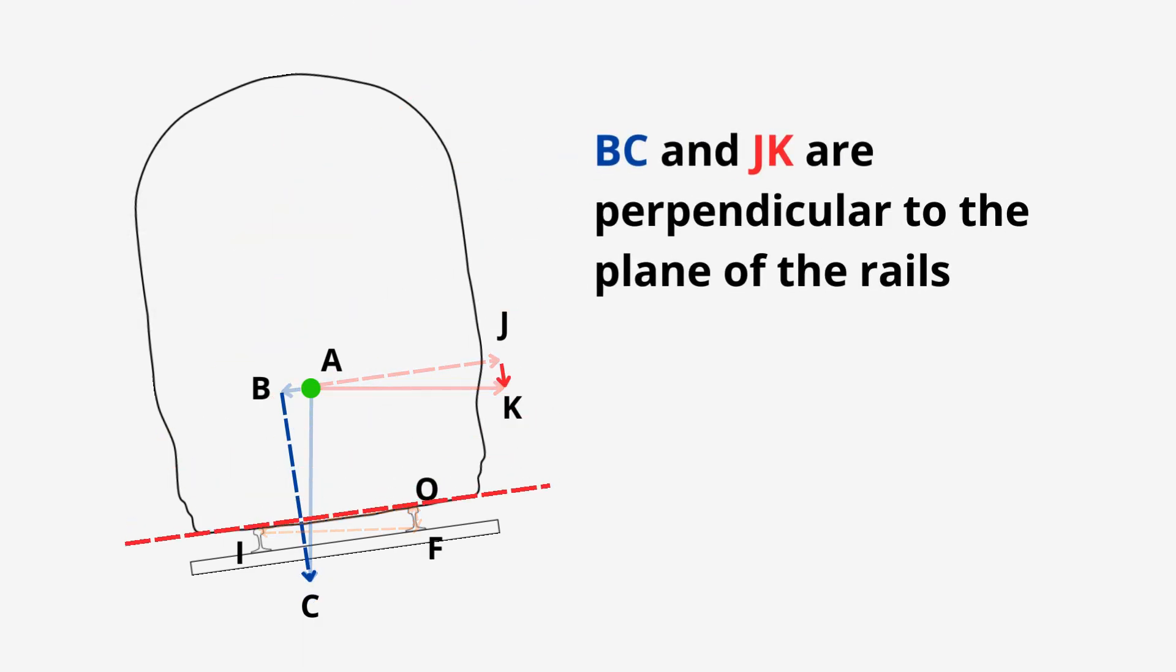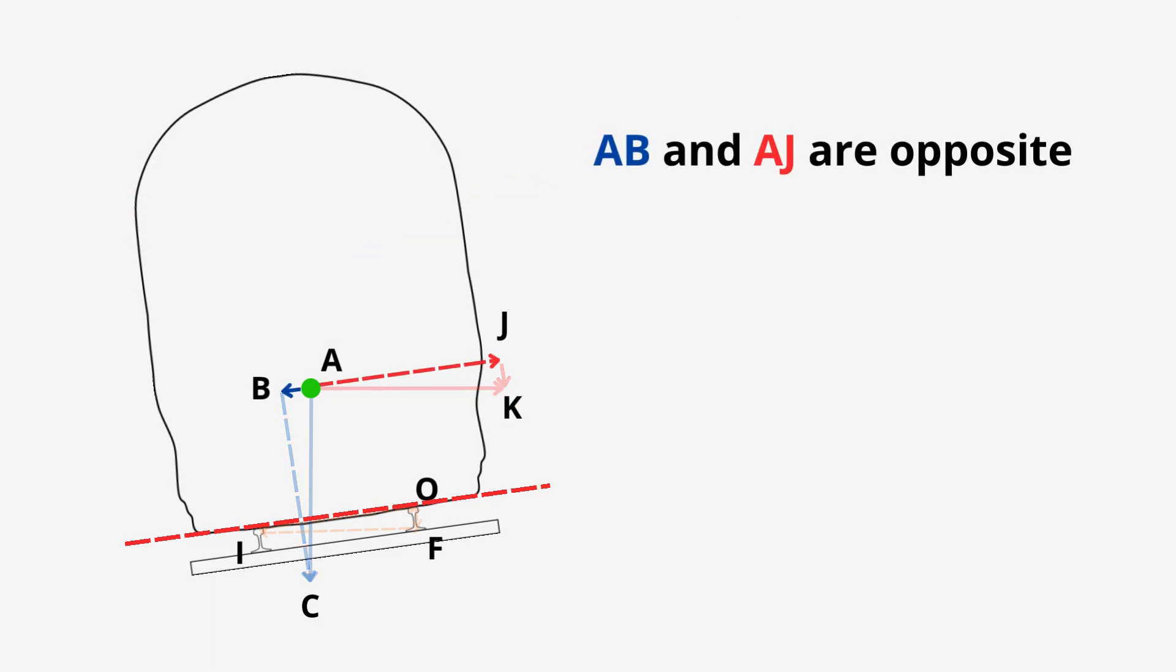Both BC and JK are acting straight down into the track, perpendicular to the plane of the rails. They will combine to form the weight, MG. AB and AJ are our lateral forces. Note that they are opposite each other. Now, if we want the overall force to be straight into the track, there cannot be any lateral force. If there is any lateral force, it would push the train towards either rail. So, that means both AB and AJ need to be equal as well as opposite so that they can cancel each other out. So, we would add them together to make zero.